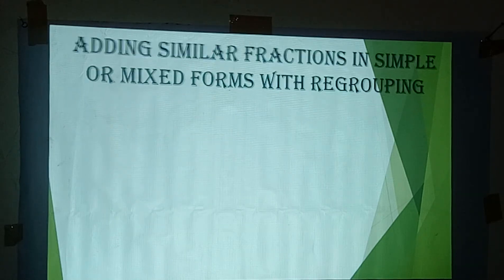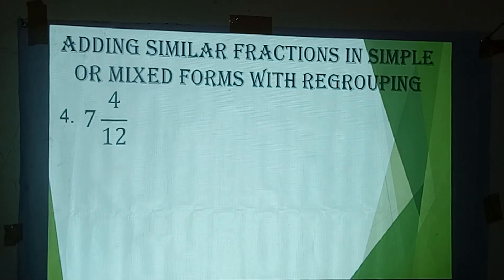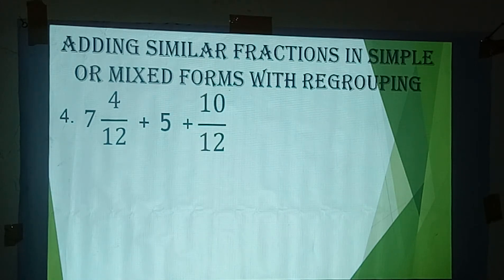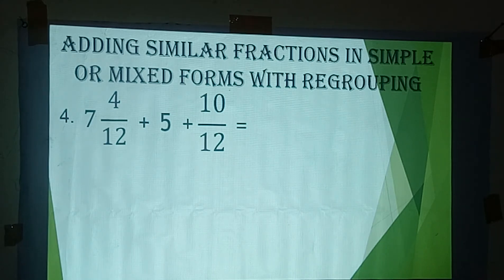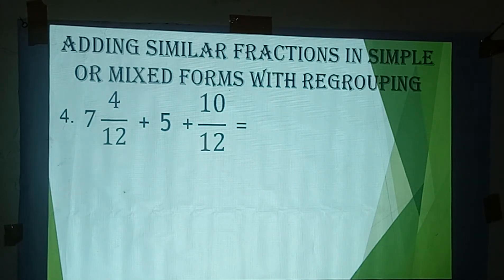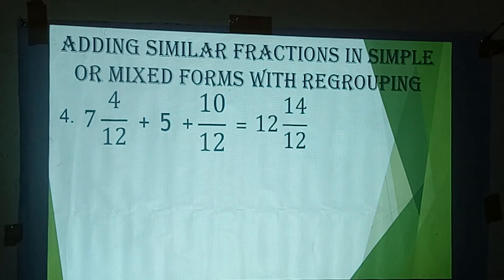Next example: 7 and 4/12 plus 5 plus 10/12 — a mixed form plus a whole number plus a simple fraction. We can add the mixed form and the whole number: 7 and 4/12 plus 5 equals 12 and 4/12, and then adding 10/12 gives 12 and 14 over 12. Since 14 over 12 is greater than 1, we regroup.